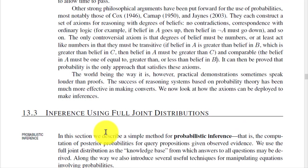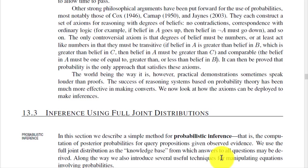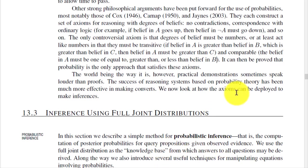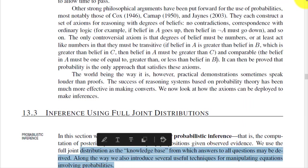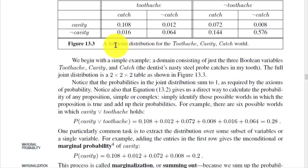The next point is inference using the full joint distribution. In this section we describe a simple method of probabilistic inference — the computation of posterior probabilities for a query proposition given observed evidence. We use the full joint distribution as the knowledge base from which answers to all questions may be derived.